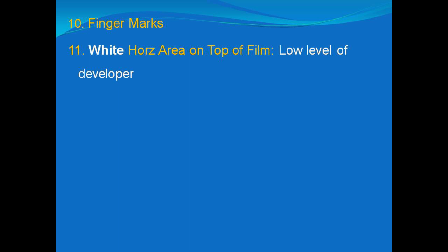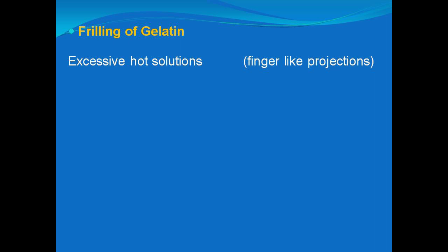The problem of a white horizontal area on top of the film results when the level of developer is less in the developer tank. To avoid this problem, the developer tank should be filled properly so as to dip the film entirely.